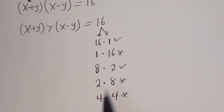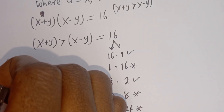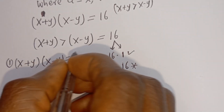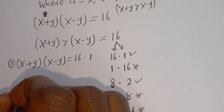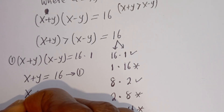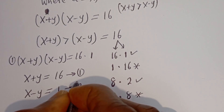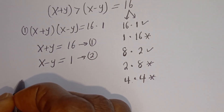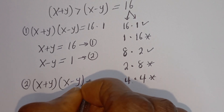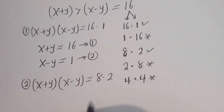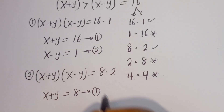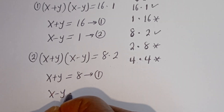So we have two valid cases. For the first case, we have (x + y)(x − y) = 16 × 1, so x plus y is equal to 16 — equation 1 — and x minus y is equal to 1 — equation 2. For the second case, we have (x + y)(x − y) = 8 × 2, so x plus y is equal to 8 — equation 1 — and x minus y is equal to 2 — equation 2.